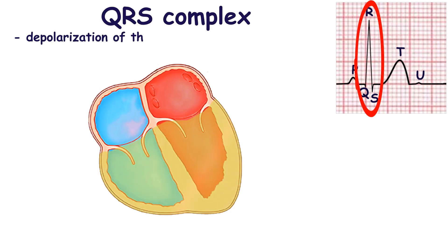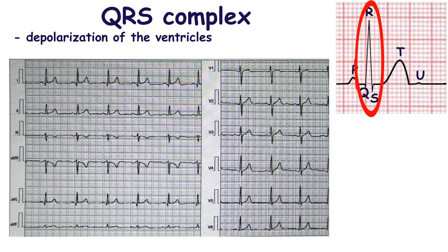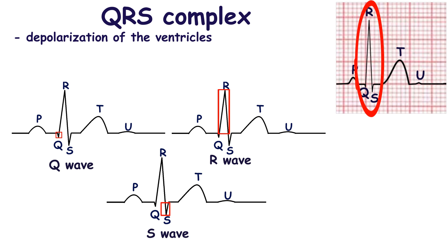The QRS complex reflects the depolarization of the ventricles and always has variations between leads. It consists of Q, R, and S waves. The first downward wave is called the Q wave. All upward waves are called R waves. Often the QRS complex begins from the R wave, so it has no Q wave.